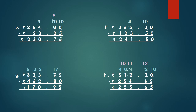Example F. Rs. 365.00 minus Rs. 123.50. 0 minus 0 equals 0. Children, we cannot subtract 5 from 0, so we borrow. The 5 becomes 4 and the 0 becomes 10. 10 minus 5 equals 5. Put point there and then 4 minus 3 equals 1, 6 minus 2 equals 4, 3 minus 1 equals 2, and at last we write the Rs. sign. So our answer is Rs. 241.50.